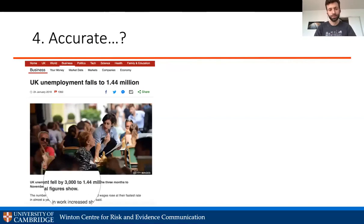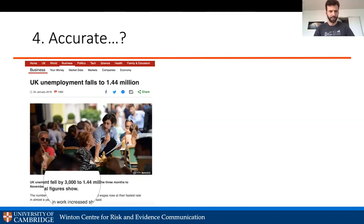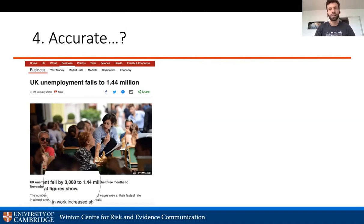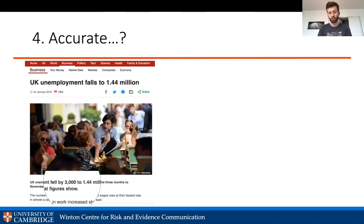Back to Onora O'Neill on accuracy — here's a more subtle problem. A UK headline read 'UK Unemployment Falls to 1.44 million.' More detail revealed it 'fell by 3,000 to 1.44 million' — alarm bells should go off, because 3,000 is a very different size number than millions. How do they even measure this? Unemployment used to be counted directly, but now it's done through surveys that are extrapolated to the whole population, with confidence intervals depending on how many people were surveyed.